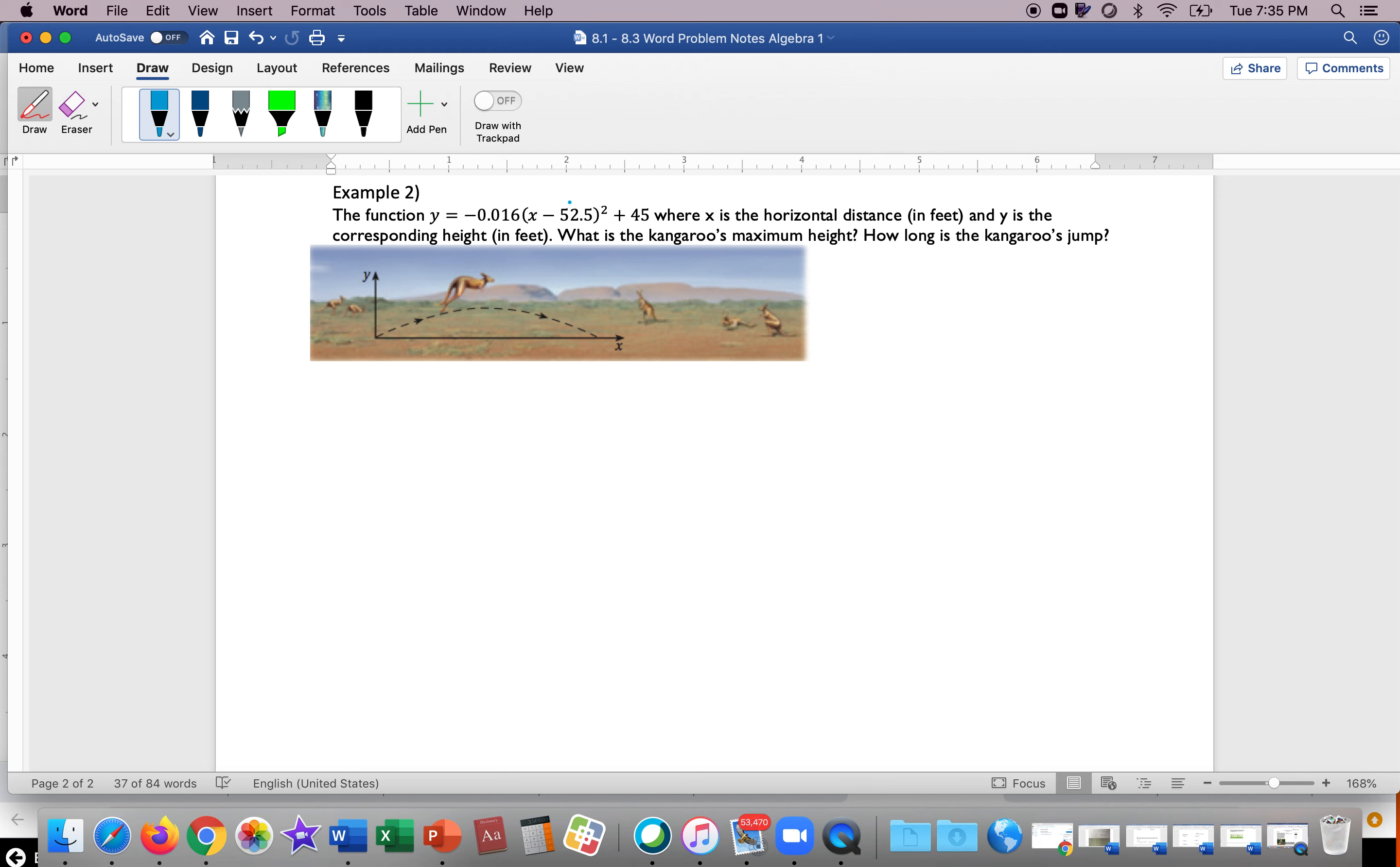So in vertex form, I like to set what's inside equal to zero. It's h comma k, right? So vertex form is a times the quantity x minus h squared plus k. We know that the vertex is opposite of inside.